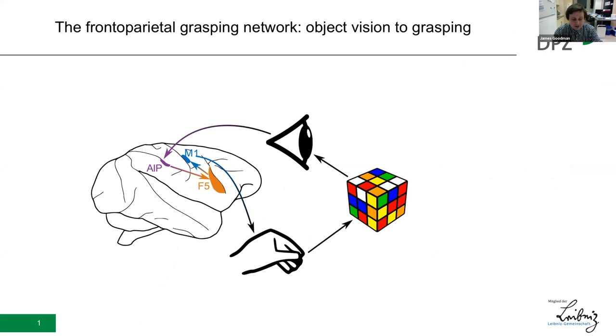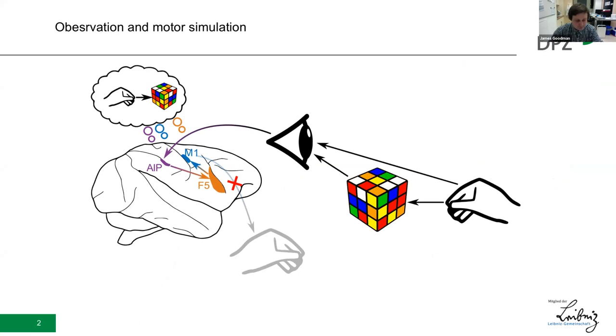In our lab, we are interested in hand movements and the frontoparietal cortical grasping network that enables them. Work from our lab and others has demonstrated that this network performs the critical task of taking visual information about objects and gradually converting that into a movement plan as those signals progress from AIP to F5 to M1.